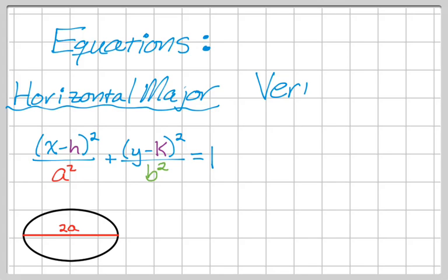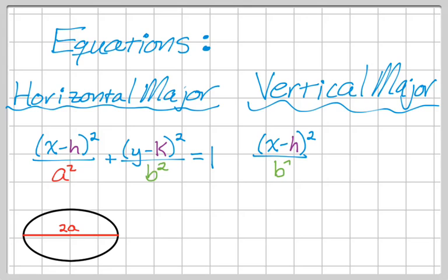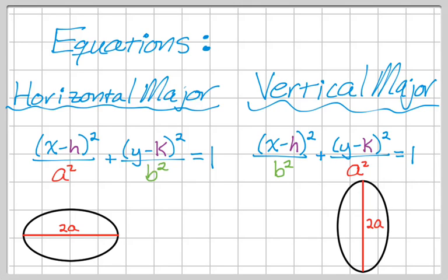We could also have a vertical major axis. So if we have a vertical major axis, the only difference in the equation is going to be the location of a² and b². So in this case, b² comes first. a² is underneath the (y-k)² term, and that means it's going to be fat or elongated in the y direction. It still equals 1. Here's a little picture. So we get that.